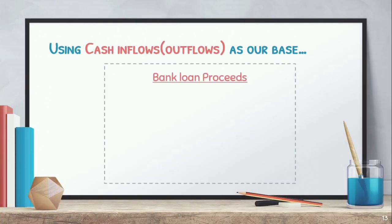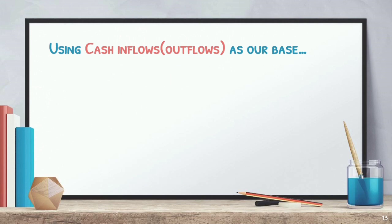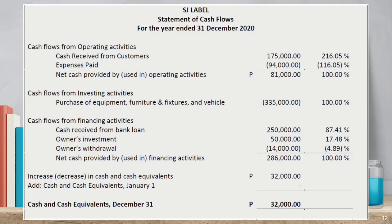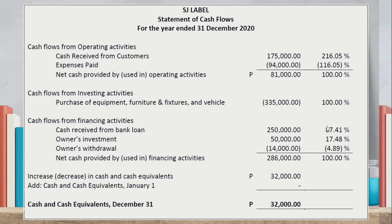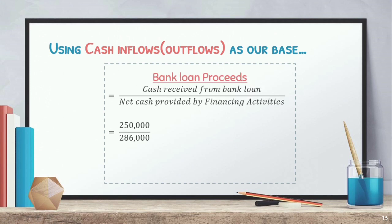Using cash inflows as our base, let's do a vertical analysis for bank loan proceeds. Bank loan proceeds — cash received from a bank loan — are under financing activities. We have 250,000 divided by net cash flow from financing activities of 286,000, which gives us 0.8741 × 100 = 87.41%.